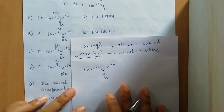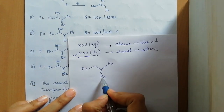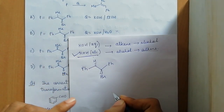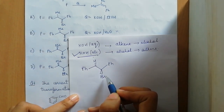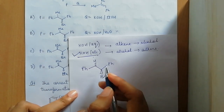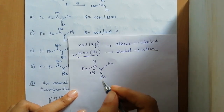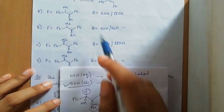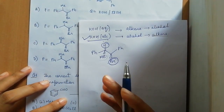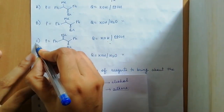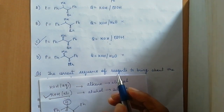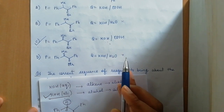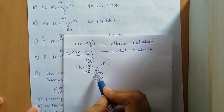Since E2 elimination is anti-periplanar, Br and H must be eliminated in an anti-periplanar arrangement. Br is present on one carbon, and H must be on the dash position (axial), while Me is on the wedge. These groups eliminate together to give the final product. Looking at the options, Me, Me, and Br must be in the same plane — option C is the correct option. Remember: KOH is a strong base, E2 elimination, and H and Br must be anti-periplanar.